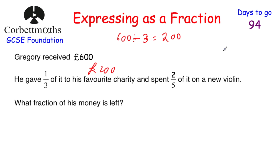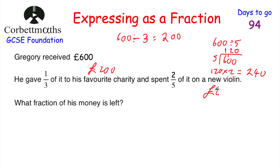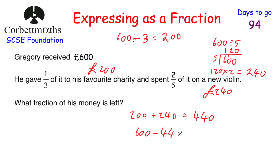Two fifths of £600: divide 600 by five using short division — 600 divided by five is 120. Then multiply by two: 120 times two is 240. So he spends £240 on a violin. He gave £200 to charity, so altogether he spent 200 plus 240, which is £440. Doing 600 minus 440 using column subtraction gives £160 left.